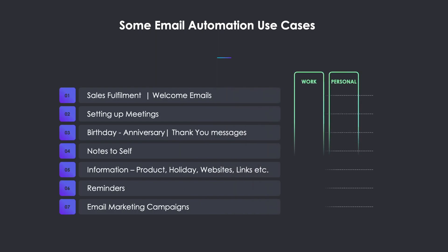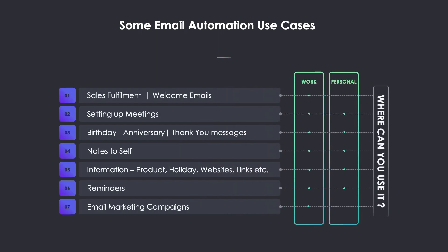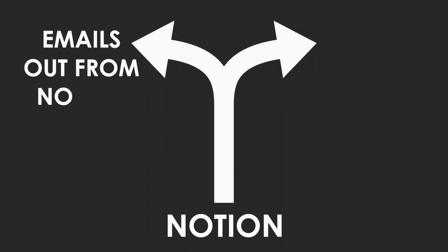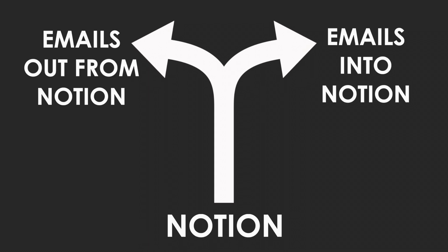As you can see, most of them cut across both work as well as life-related areas. There are two ways you can automate Notion emails: emails that go out from Notion, and emails that come into Notion. And that's what we will touch upon in today's video.